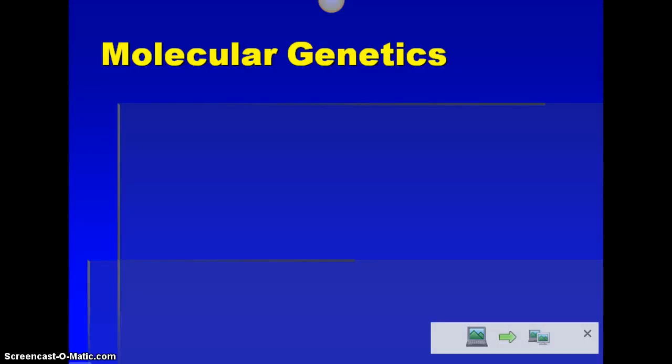Hi class. Today we're going to be looking at Chapter 9, Section 2. We'll be doing a few definitions here to start out, and then we'll be doing some practice Punnett squares. This will lead into a little probability lab with Punnett squares, just kind of getting used to them, and then into some more practice Punnett squares. We'll be doing those for a couple days.